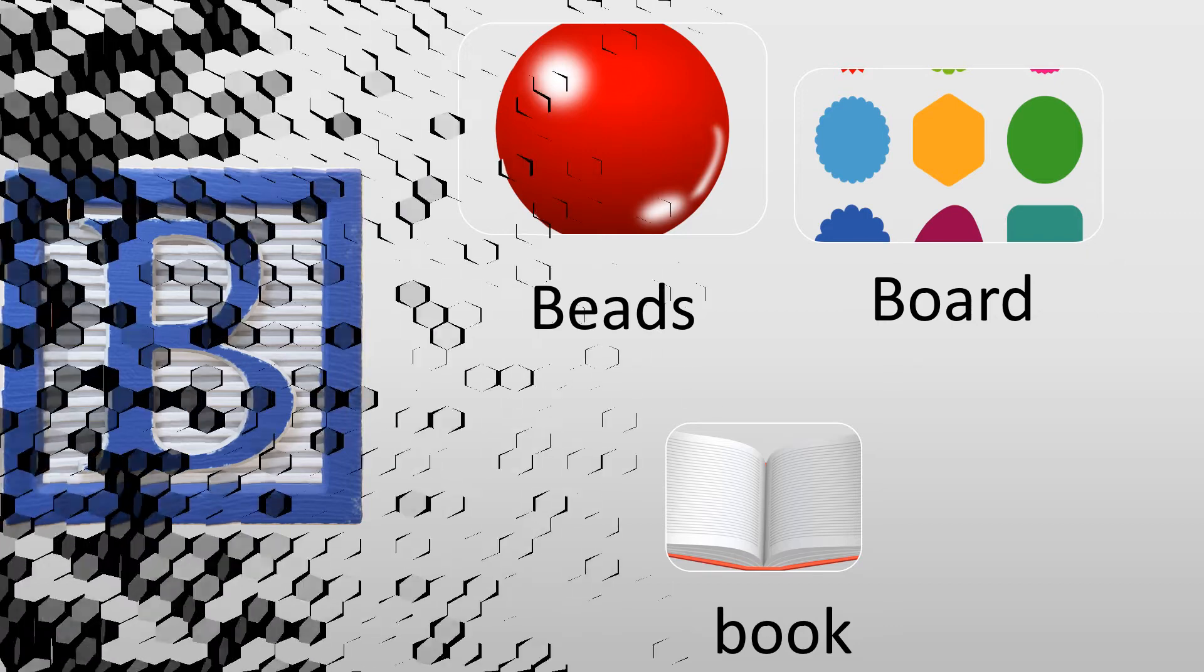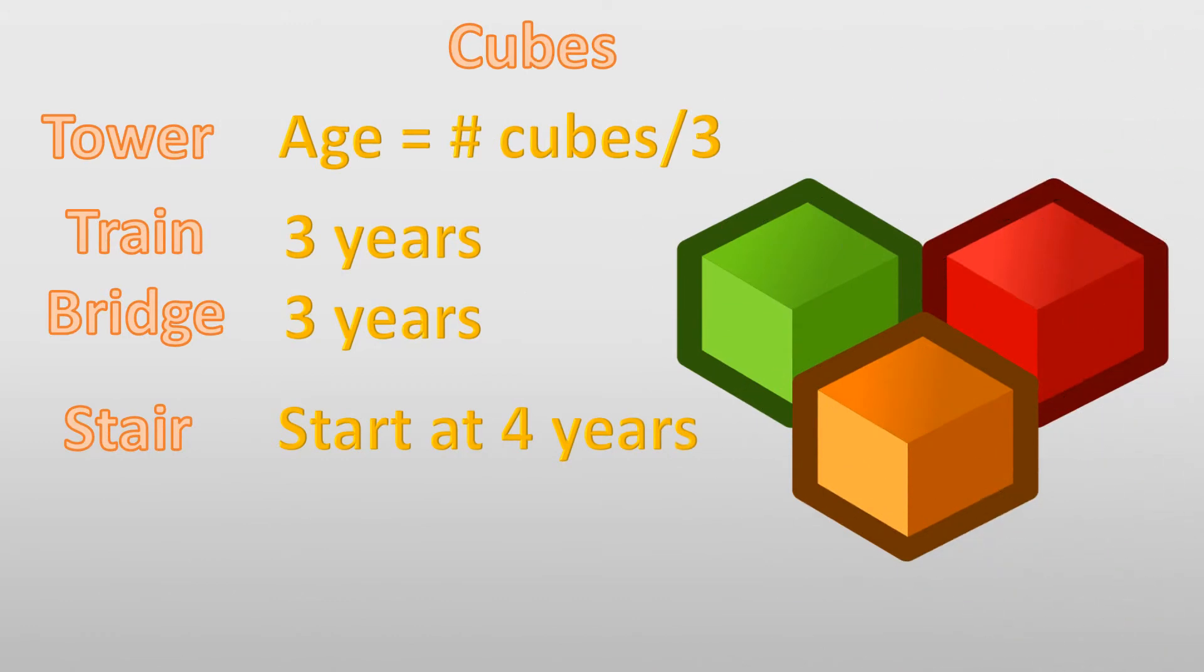So starting for the cubes. There is a rule for the tower building. If the child could, for example, build 9 cubes, you will divide them over 3 and this will be the age of the child. For example, 6 over 3, 2. So under the fine motor category, you will write estimated age, for example 2 years, because he built 6 tower cubes. For the train and the bridge, straightforward, you will say 3 years old. And building stairs, it will start from 4 years of age. This is very simple.